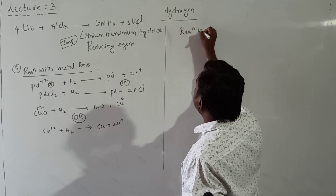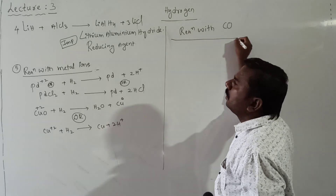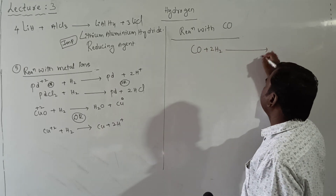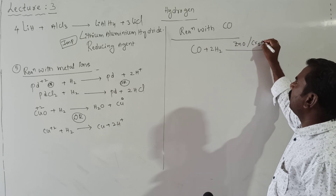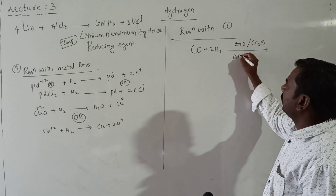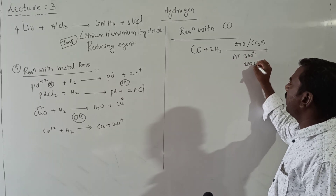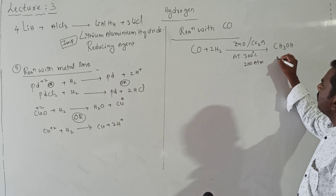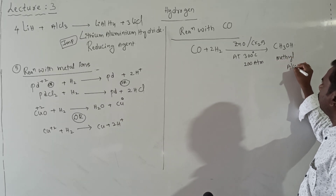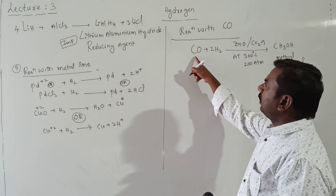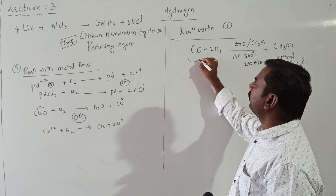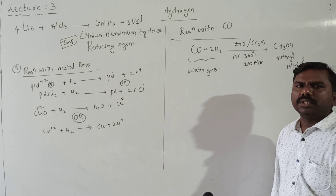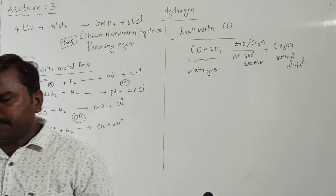Sixth: reaction with carbon monoxide. CO treated with hydrogen in the presence of a catalyst Cr₂O₃ at 300°C and 200 atm pressure gives CH₃OH — methyl alcohol (methanol). The CO plus hydrogen mixture is called water gas. From water gas, we can prepare methanol.